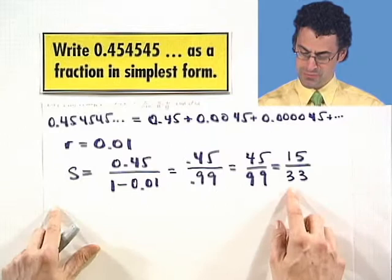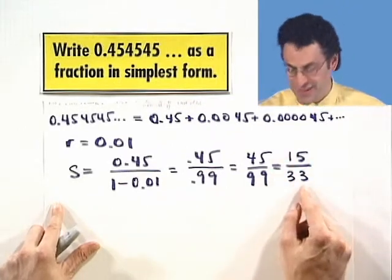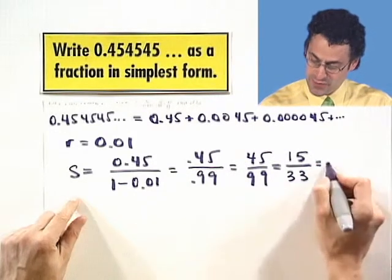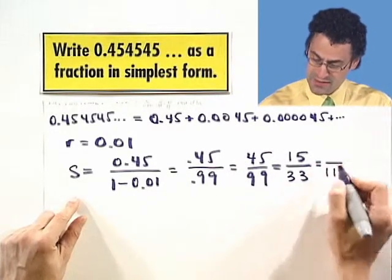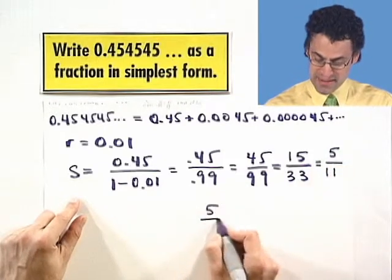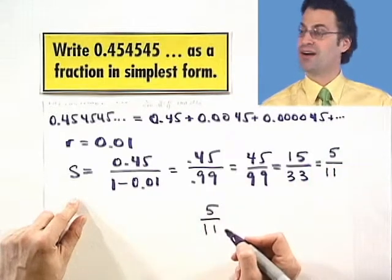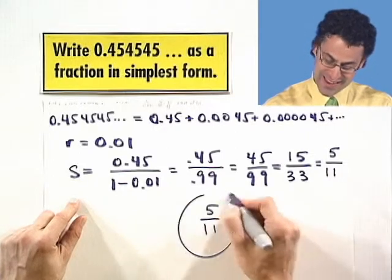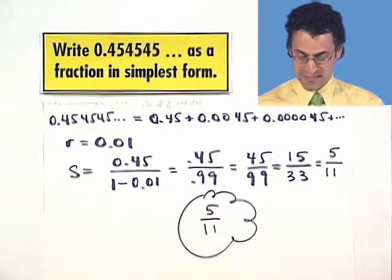Simplest form. There's an extra factor of 3. So this is almost simplest form. You can actually factor out another factor of 3 and get 11 on the bottom and 5 as a numerator. So, 5 over 11. In simplest, simplest form, it looks like it's 5 elevenths.